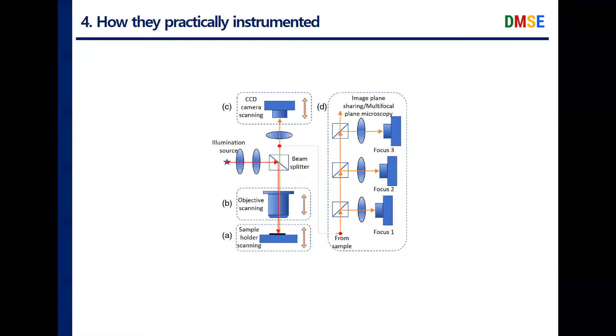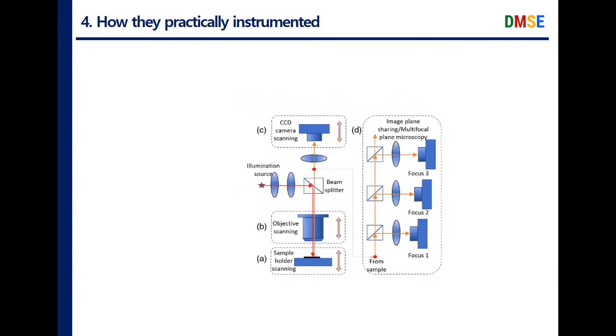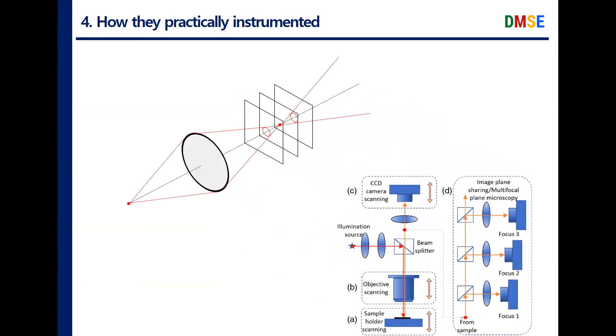As Myungwon said before, the TSOM technique collects through-focus images. To get through-focus images, we can control the relative distance between the focus and image plane mechanically. First, we can scan the sample holder, which is the object itself. Second, we can scan the objective lenses. Lastly, we can scan the image plane itself.